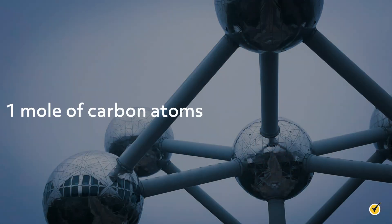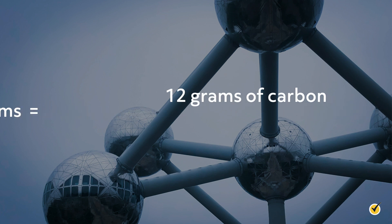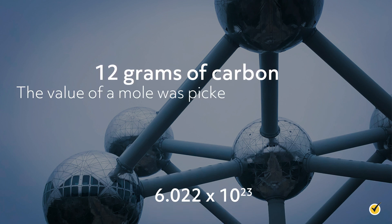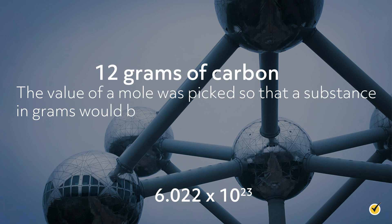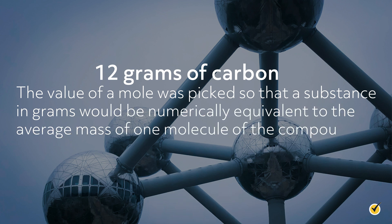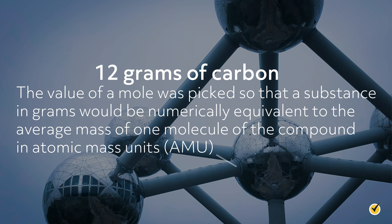So why do we need such a ludicrously large number? Well, it turns out that when you're dealing with something as small as atoms, Avogadro's number isn't that large. One mole of carbon atoms would just be 12 grams of carbon. If that 12 grams seems oddly precise, that's because scientists specifically selected the value of the mole so that a substance in grams would be numerically equivalent to the average mass of one molecule of the compound in atomic mass units.